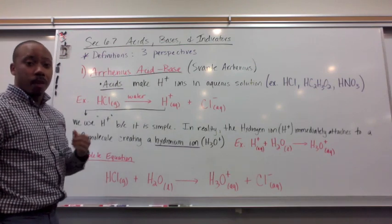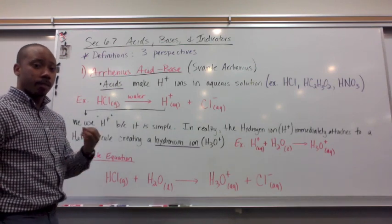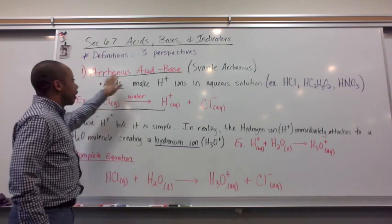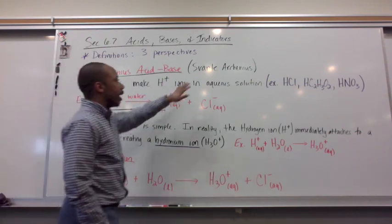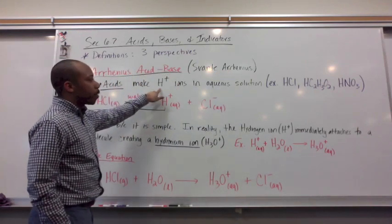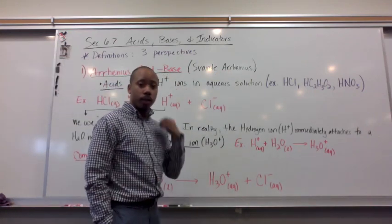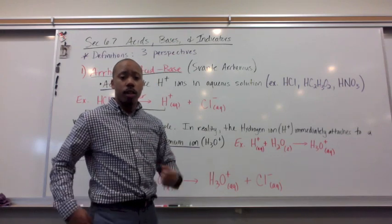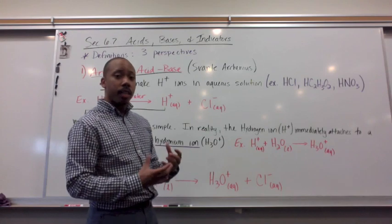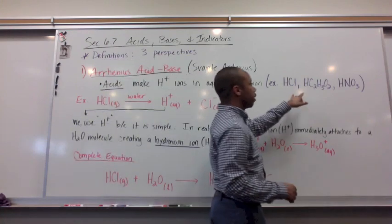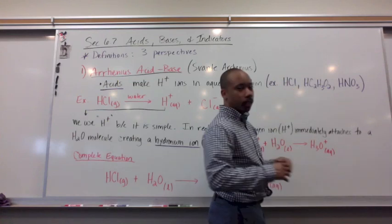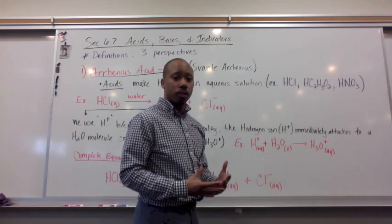The definitions of acids and bases come from three different perspectives. The first perspective is Arrhenius acids and bases, from a scientist named Svante Arrhenius. He said that acids make H-plus ions in aqueous solution — when you dissolve an acid in water, you have H-plus ions present. That H-plus is evident in our chemical formulas for acids; they all start with hydrogen, reminding us that H-plus ions are in solution.